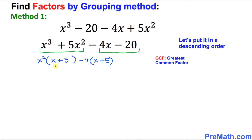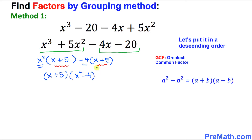The next thing I want you to do is look at these two parentheses — they are the same. You can go ahead and put x plus 5 in the front, then write whatever we are left with in the second parentheses: x squared minus 4. Now I want you to focus on x squared minus 4. This represents a difference of two squares, so we are going to apply that formula.